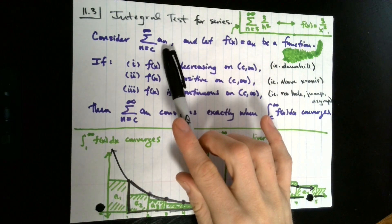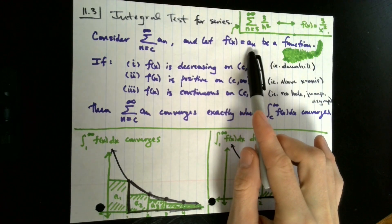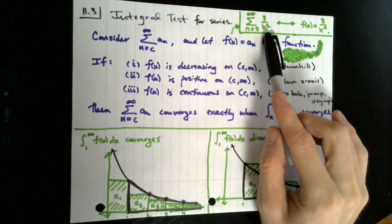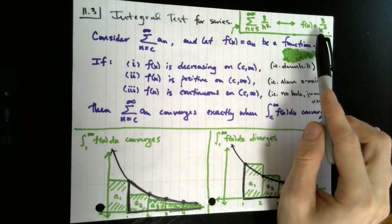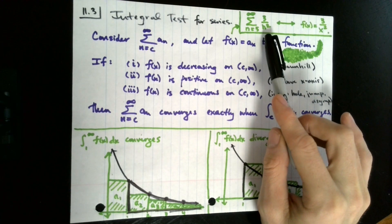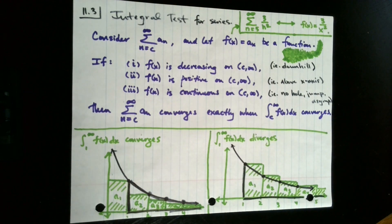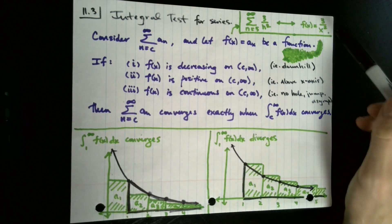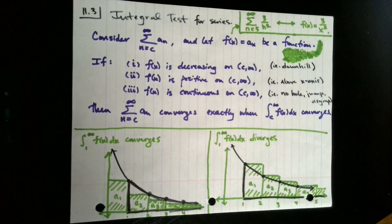Whereas the terms of our series are of the form a_n, our function is going to be of the form a sub x. Here's an example: we simply take the terms of our series — in this case the terms are 3 over n squared — and replace the n with x. So the terms are of the form 3 over n squared, and the associated function is f of x equals 3 over x squared. You might notice this function looks a lot like functions we've seen in our course.